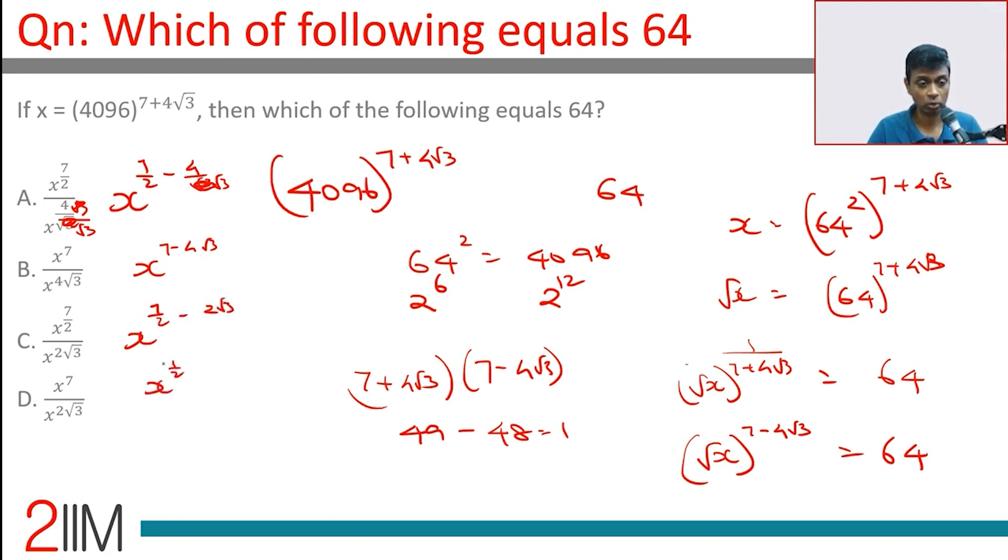This choice works brilliantly. Choice here, if we have 4 root 3, we would have exploded. It is 4 by root 3, so we don't have to worry about it. Choice C takes us to x power 7 by 2 minus 2 root 3, or x power half, whole to the power 7 minus 4 root 3.